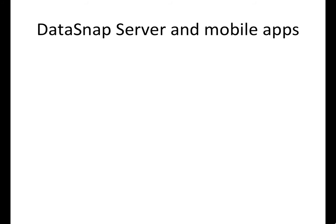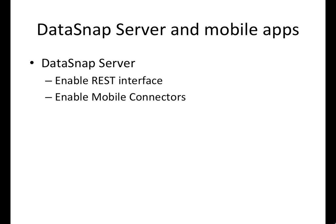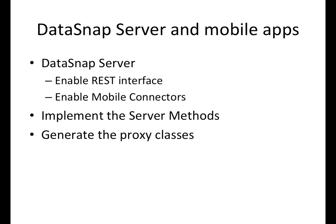In order to allow a DataSnap server and mobile applications to interact with each other, you have to follow a few steps. The first is to enable the REST interface in mobile connectors on your DataSnap server. After that, you have to expose the business logic on your server to the server methods. Having the business logic exposed, you just need to generate the proxy class for the platform you are targeting — in this video, Android.